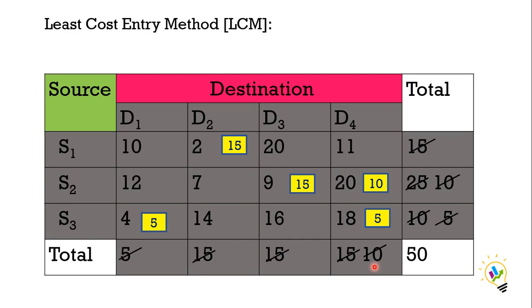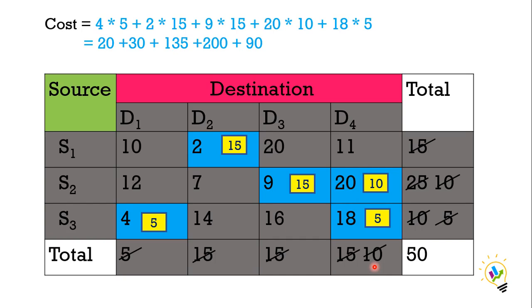Now let us calculate the costs. To calculate costs, what we must do? Multiply the cost by the number of units. First, 4 into 5 plus 2 into 15 plus 9 into 15 plus 20 into 10 plus 18 into 5. Multiply and add. We will be getting 475.